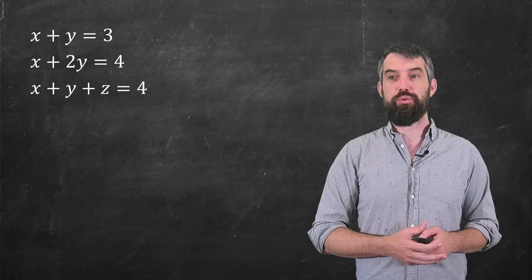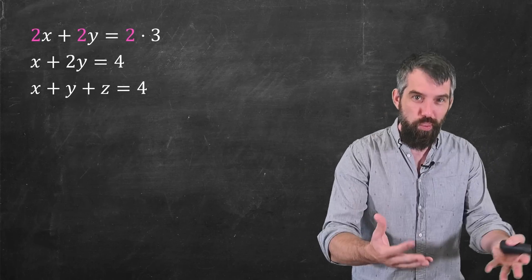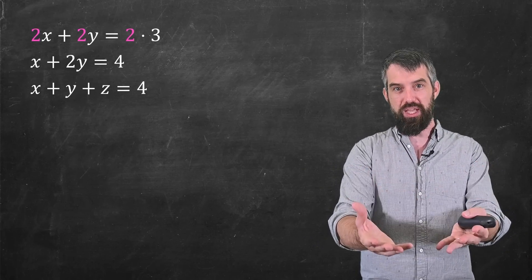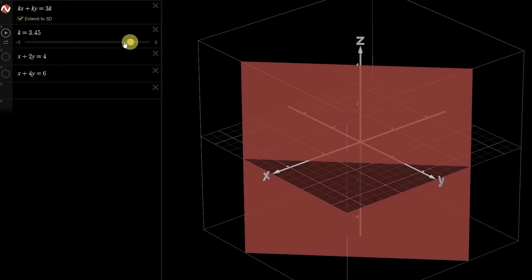For example, x plus y equal to 3 could become 2x plus 2y equal 2 times 3. Visually, that doesn't change the plane at all. It's still just the same sets of x and y and z values regardless of that scalar multiplier. This is why I'm always allowed to multiply by scalars that isn't changing the point of intersection.